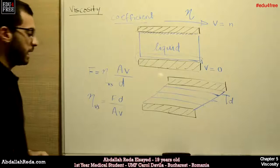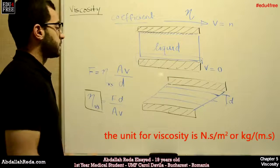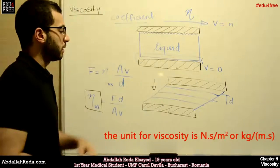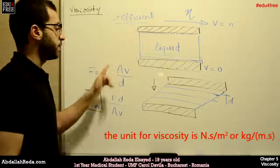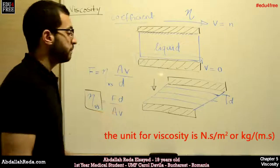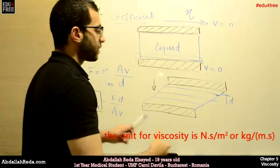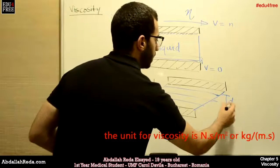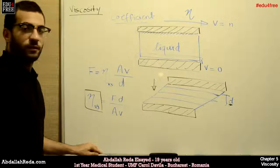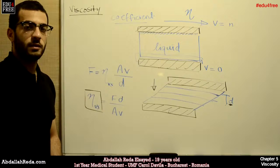So we can say that the coefficient of viscosity equals the force multiplied by the distance, divided by the area and the velocity. Finally, viscosity is defined as the tangential force that acts on a layer with one unit of area to cause a difference in velocity of one unit between two layers of liquid separated by one unit of distance. That's it for viscosity — I hope it was easy, and thank you for watching.